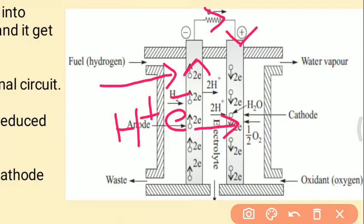If electrons are traveling to the cathode and are not consumed, the excess electrons will accumulate at the cathode side, stopping further electrons from arriving. So it is necessary to consume the electrons coming at the cathode. For this reason, oxygen as an oxidant is supplied at the cathode side to consume the electrons coming from the anode. After the reduction reaction at the cathode, these electrons are consumed.